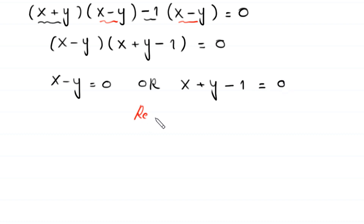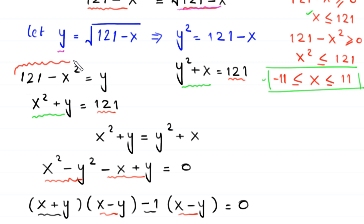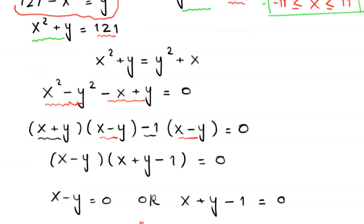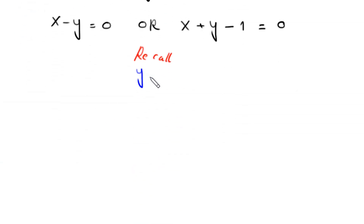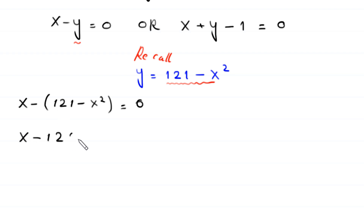Recalling that y equals 121 minus x squared, we substitute into Case 1: x minus (121 minus x squared) equals 0. Simplifying: x minus 121 plus x squared equals 0, which rearranges to x squared plus x minus 121 equals 0.